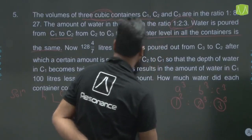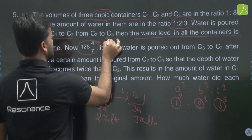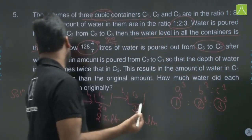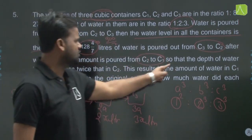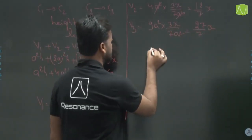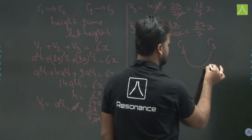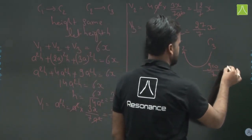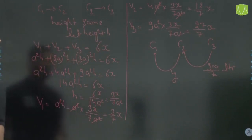Then 900/7 liters of water is transferred from C3 to C2. After that, a certain amount Y is transferred from C2 back to C1, so that the depth of water in C1 becomes twice the depth in C2.